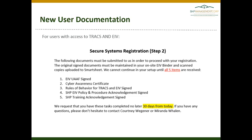The following documents must be submitted to us in order to proceed with your registration. Original signed documents must be maintained in your on-site EIV binder and scanned copies uploaded to Smartsheet. The five items that we require from you are: your EIV UAAF signed — that is the PDF document that Courtney sent — the Cyber Awareness Certificate, Rules of Behavior for TRACS and EIV reviewed and signed, the SHP EIV Policy and Procedure Acknowledgement signed, and the SHP Training Acknowledgement signed.